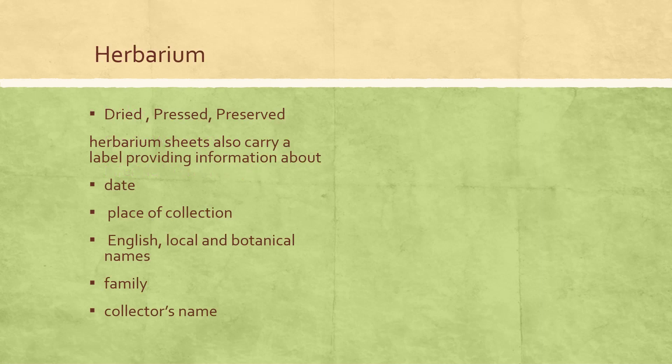In a herbarium, specimens are first dried, pressed, and preserved. The herbarium sheets also carry a label providing information about: date and place of collection, English, local, and botanical names, family, and collector's name.